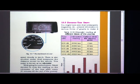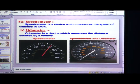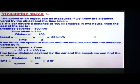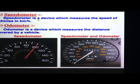Now let us recap what we discussed today. Measuring speed: if you want to calculate speed then distance and time are required; to calculate distance use speed multiplied by time; to calculate time use distance divided by speed. The speed of an object can be measured if we know the distance covered and time taken. A speedometer is a device which measures the speed of vehicles in kilometer per hour.